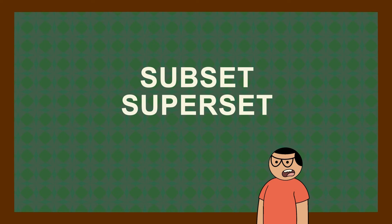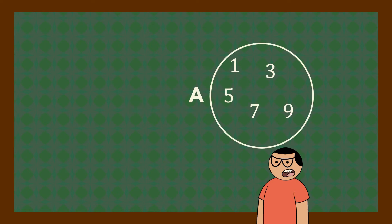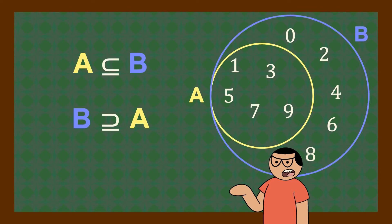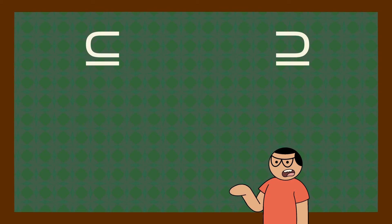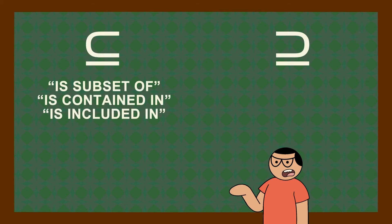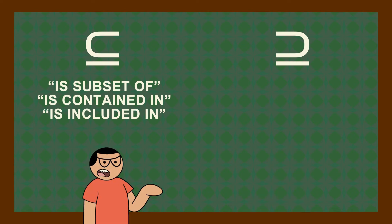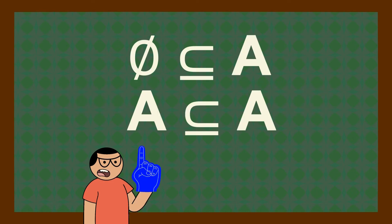Let's talk about subsets and supersets. If any object of a set, let's say set A, is in another set, let's say B, then A is a subset of B or B is a superset of A. The subset symbol means is subset of, is contained in, or is included in. The superset symbol means is superset of, contains, or includes.